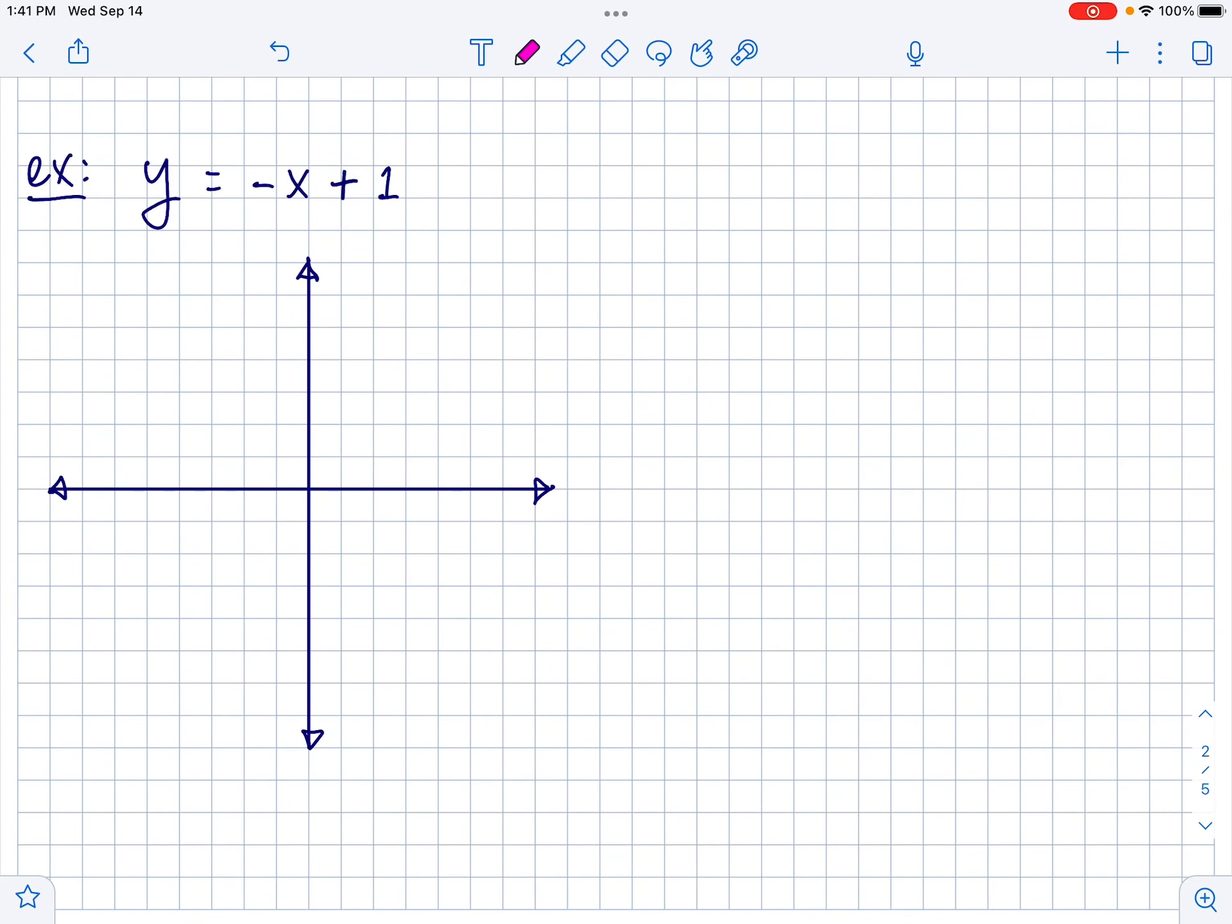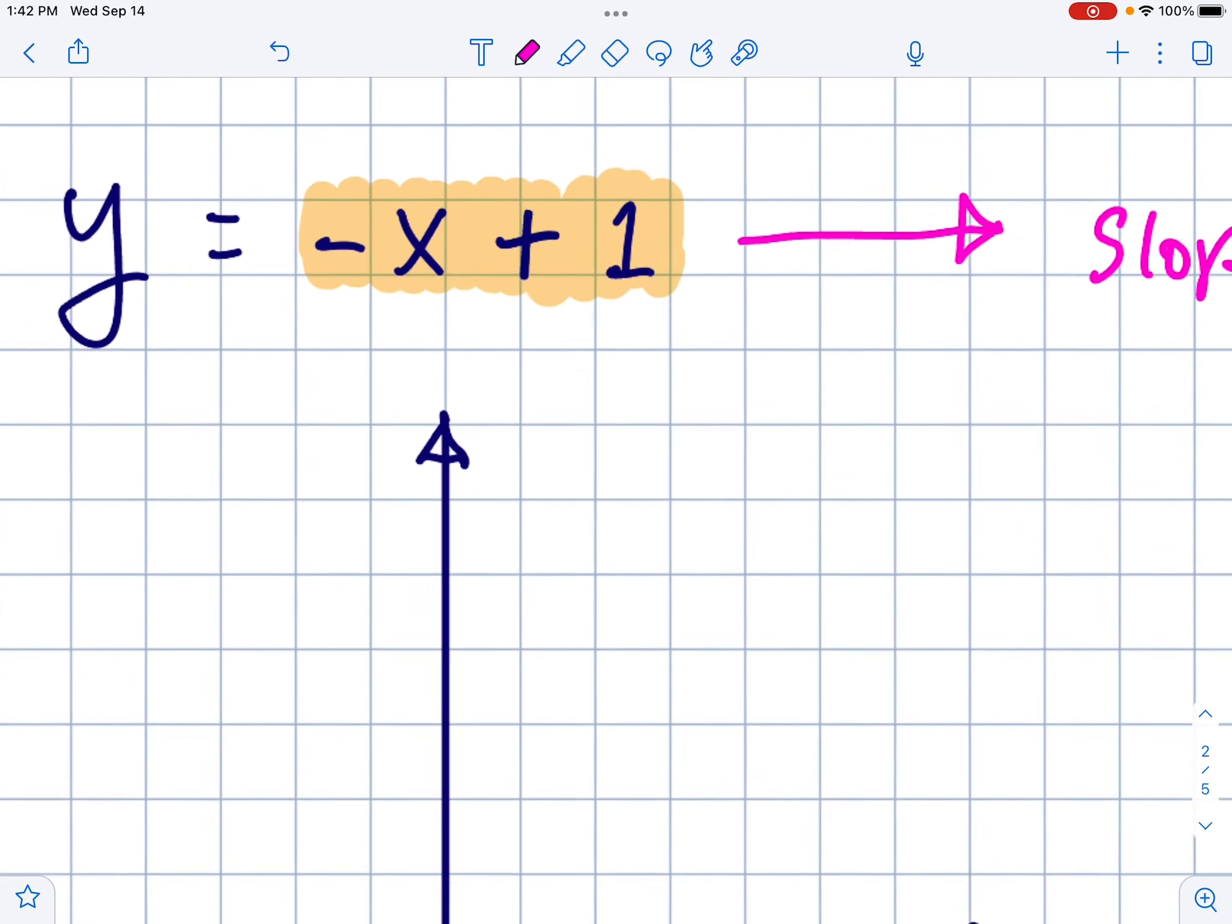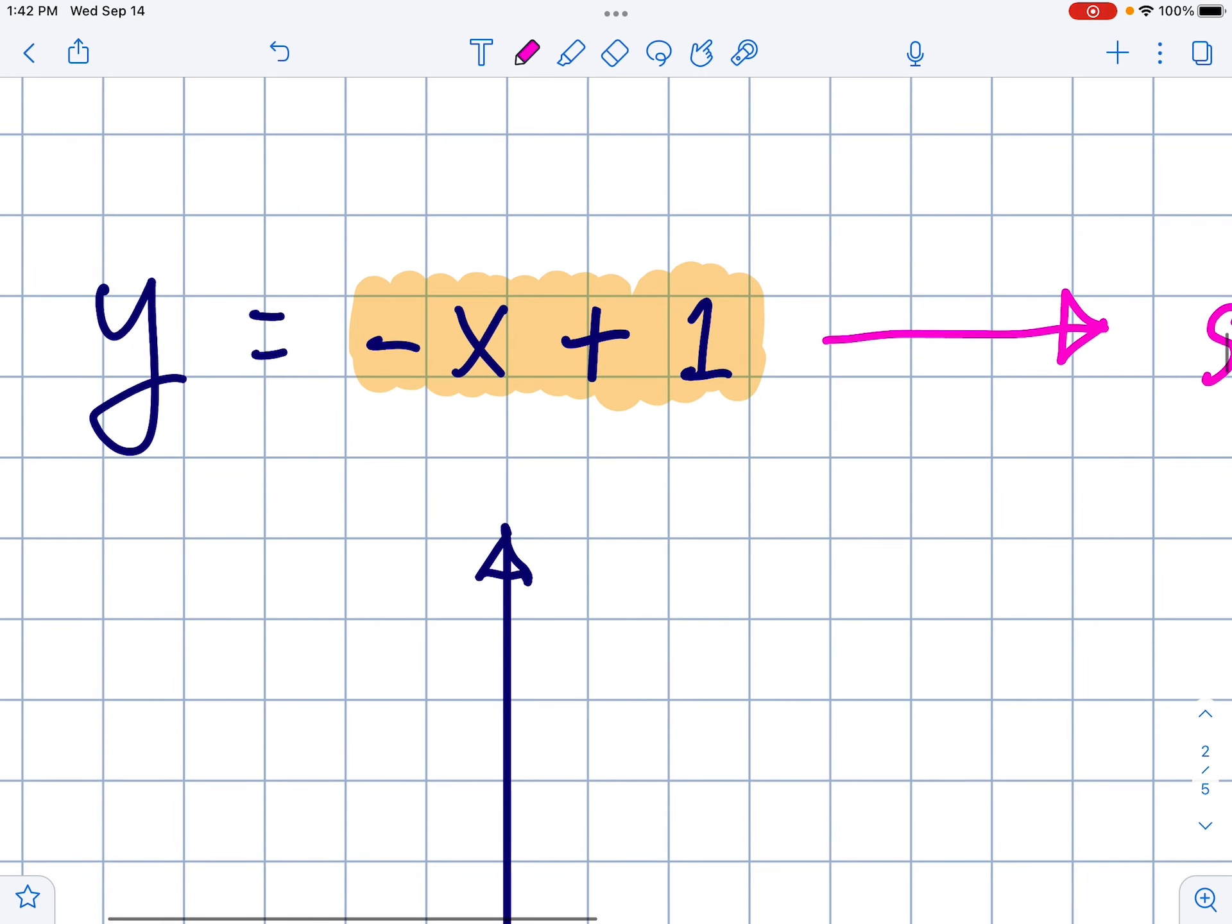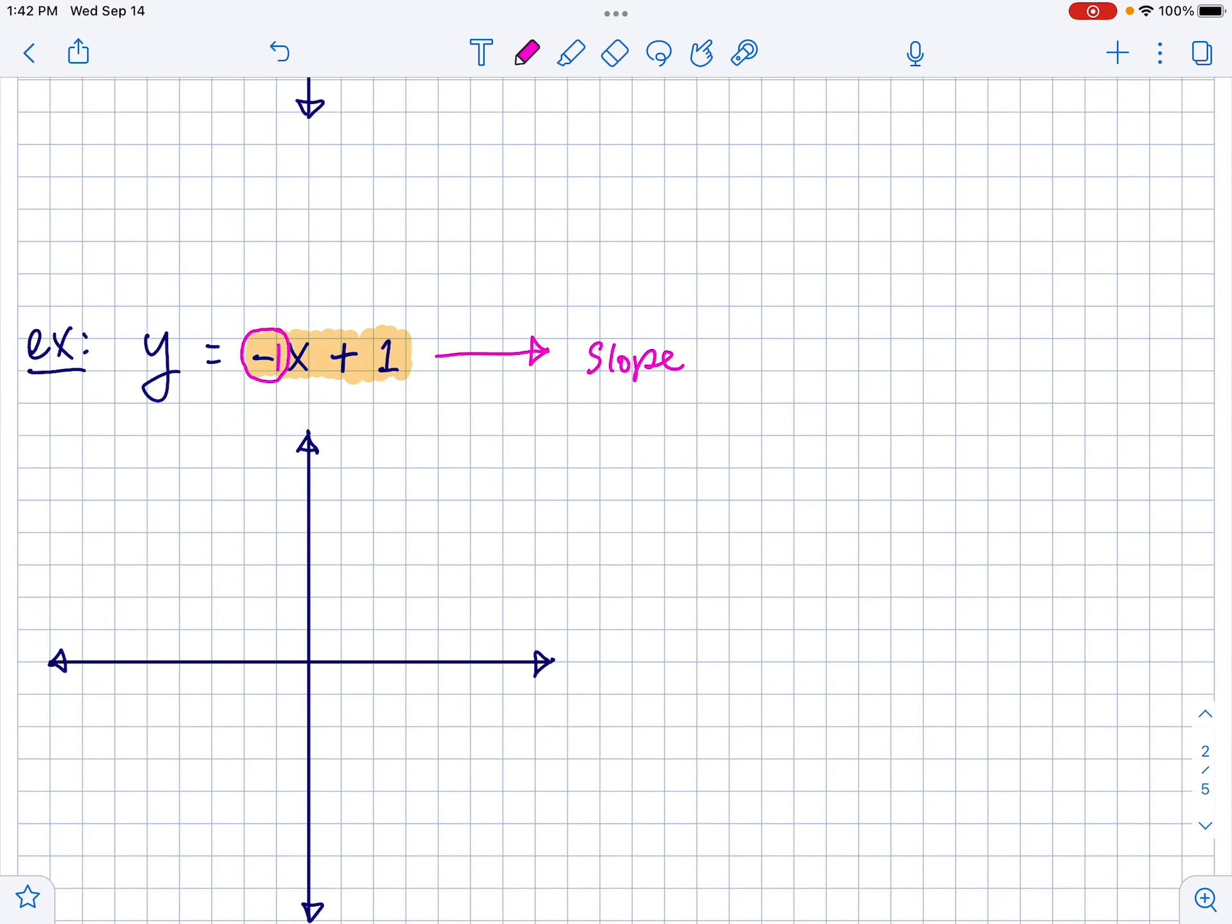Next up, we're going to graph a sketch of y equals negative x plus 1. So first up, let's talk about everything we know about this function. The slope is the number in front of the x. So if you look in front of the x right here, there's not really a number, but if there's ever not a number there, you can just pretend it's a little ghosty 1. So it's like a negative 1 in front of the x.